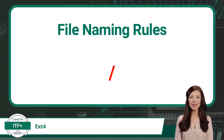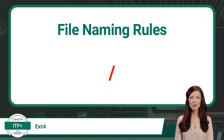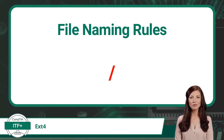Finally, EXT4 has some of the most lenient naming rules for files and folders. It restricts the use of only one character when naming a file or a folder, and that character is the forward slash.